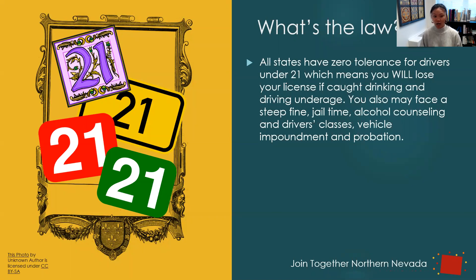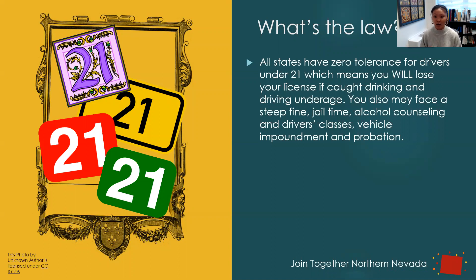If you're caught drinking and driving and you're over 21, there are pretty serious consequences, but they're even more serious if you're under 21. Depending on the circumstance and the state, you may also face a steep fine, jail time, alcohol counseling, driver's classes, vehicle impoundment, and probation. A lot of serious consequences — not only to losing your license but also to your life and other people's lives. That's super dangerous.